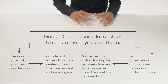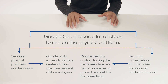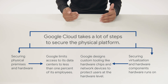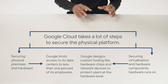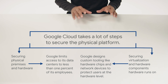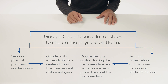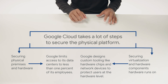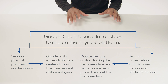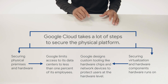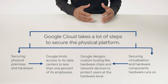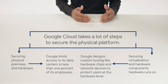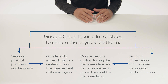Google data centers have thousands of server machines connected to a local network, providing an initial layer of security. Both the server boards and the networking equipment are custom designed by Google to adhere to their tough security requirements. Google's custom designed Titan hardware security chip can be deployed on both servers and peripherals, allowing Google to identify and authenticate devices at the hardware level.